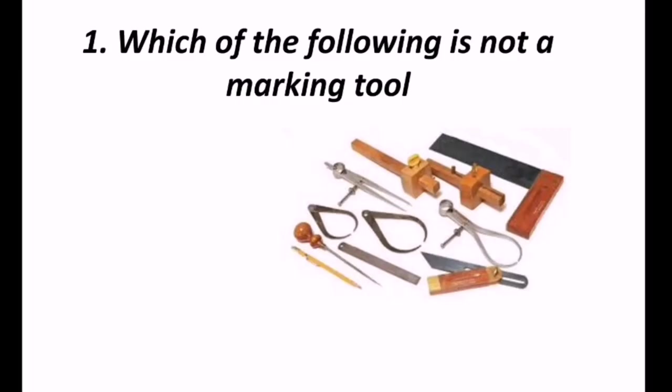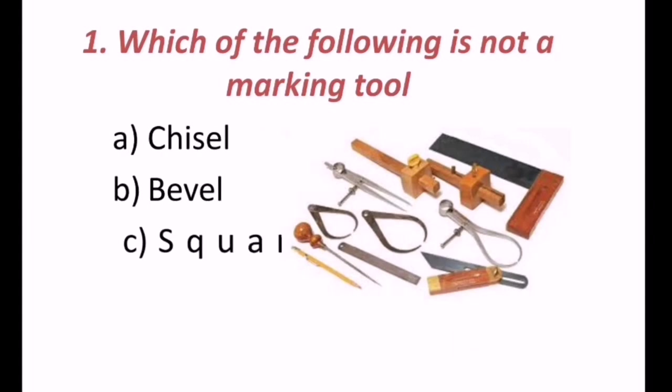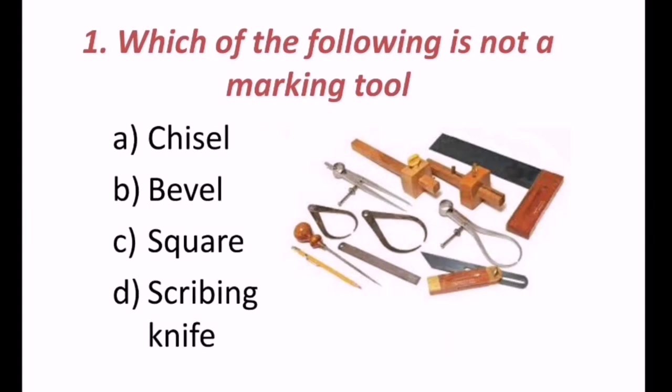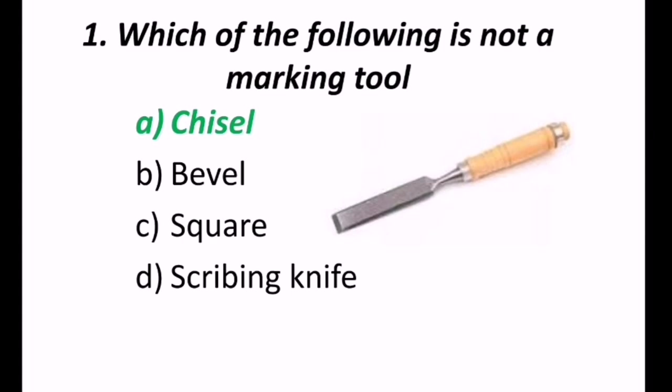So let's get started with the 1st question in this carpentry. Which of the following is not a marking tool? So the options are chisel, bevel, square and scribing knife. Out of these 4 options, which is not a marking tool? So chisel is not a marking tool. Hence, the answer is A.